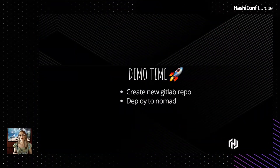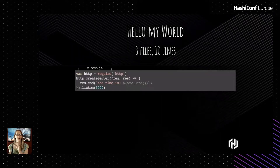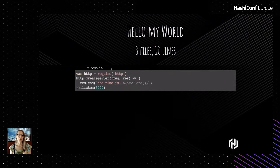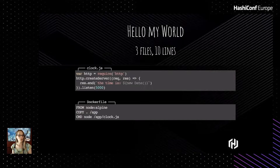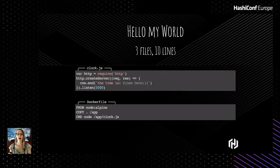Now it's time for demo time! We're going to create a new GitLab repo and deploy it to Nomad. We'll do it as a hello world classic thing — three files in slightly less than 10 lines. We have a clock.js file: a simple Node.js minimal HTTP server that answers every request with the time and date, listening on port 5000. Then we add a Dockerfile pulling from Node Alpine — optimized for Node, NPM, and Yarn — copying all files into /app, and running node app/clock.js. Then we include our two-line .gitlab-ci.yml file.